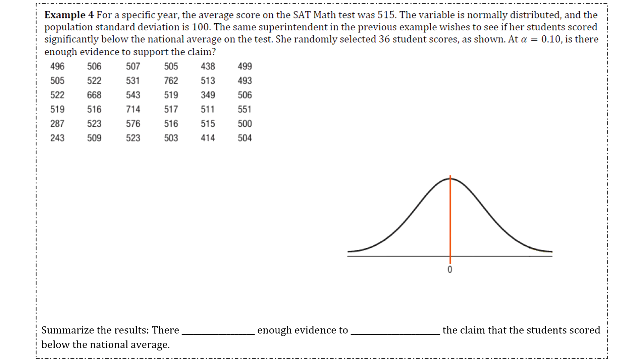Okay, so let's do a couple more examples. Example 4 says, for a specific year, the average score on the SAT math test was 515. The variable is normally distributed and the population standard deviation is 100. The same superintendent in the previous example wishes to see if her students scored significantly below the national average on the test. She randomly selected 36 student scores as shown. Alpha is 0.1, is there enough evidence to support the claim?